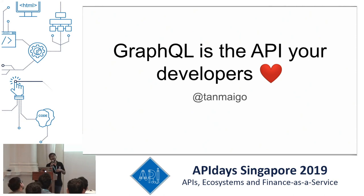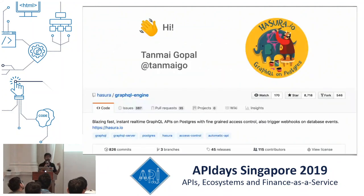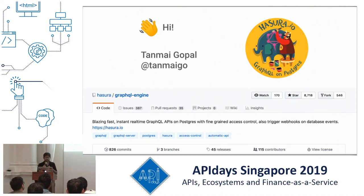GraphQL is the API that your developers need, want, and love, even if you don't know it today. I'm Tanmay. I'm one of the founders and one of the creators of the open source project Hasura. We launched this late last year, did about 9,000 stars on GitHub, a few million downloads, really good enterprise organic traction, lots of Fortune 500 users.